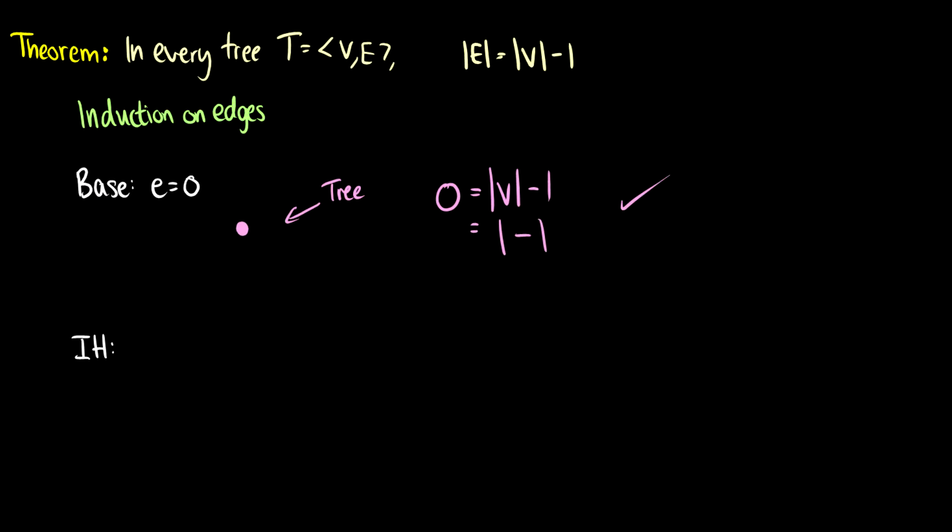For induction, we're going to assume that E is going to be greater than or equal to 1. Of course, I use this little e to denote the number of edges. So we're saying that there's at least one edge here. So we know that there's at least one vertex. So we can say there's at least one vertex V in our tree.